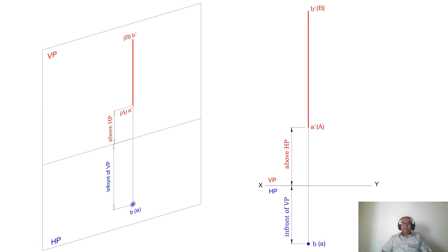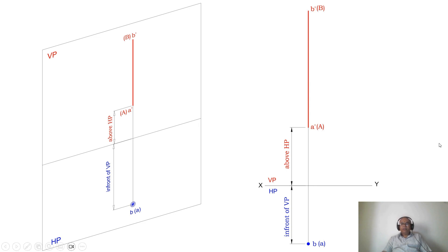Always remember: whenever the line is perpendicular to HP, in HP you must get a point. And since the line is perpendicular to HP, in VP you get a vertical line. That is how you analyze both the line inclined to HP and parallel to VP, and the line perpendicular to HP and parallel to VP. This is how you understand these two concepts. Thank you.